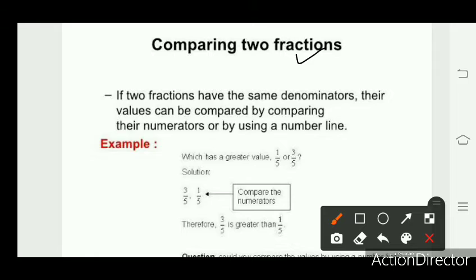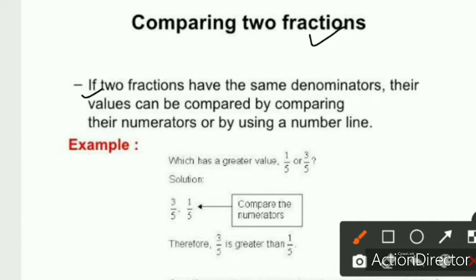Now we will compare two fractions. If two fractions have the same denominators, their values can be compared by comparing their numerators. For example, which has a greater value: 1 upon 5 or 3 upon 5? The fraction having the greater numerator is the greater fraction, so 3 upon 5 is greater than 1 upon 5.